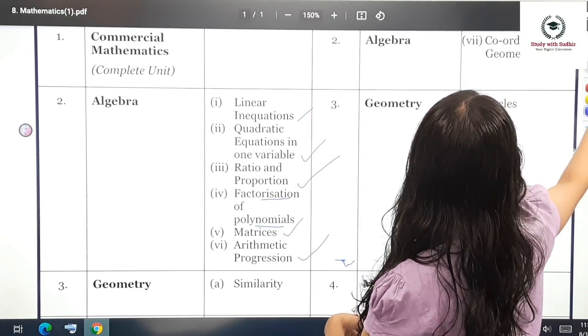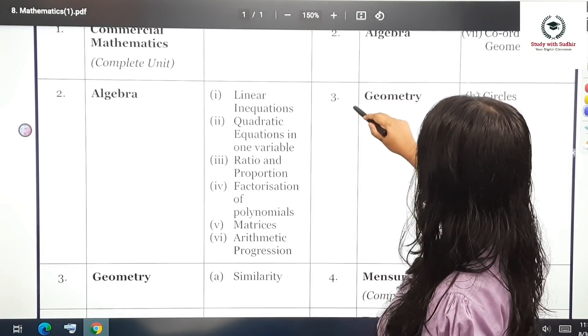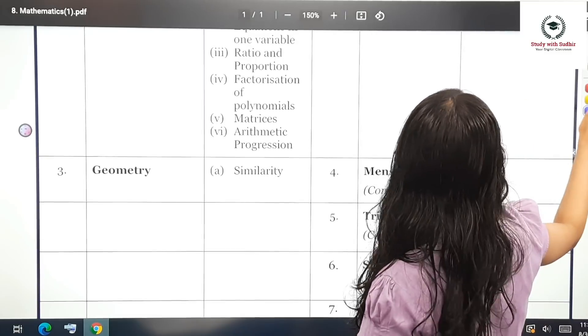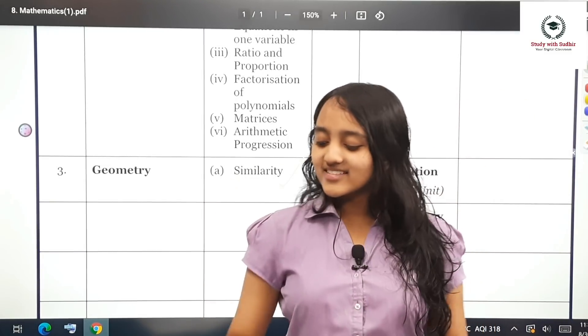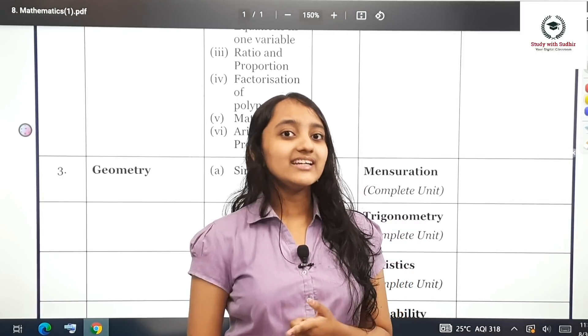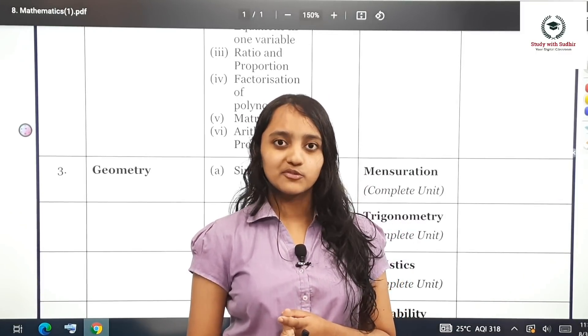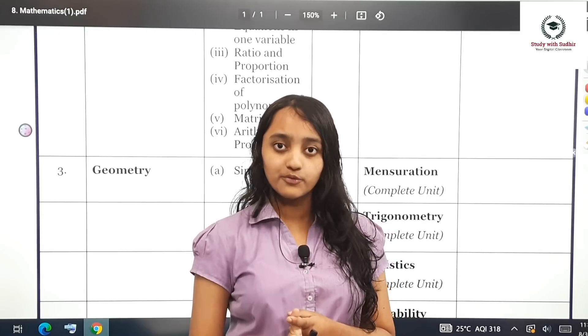Next you have geometry. Geometry is one chapter in semester 1: similarity. For similarity, you don't have any proofs. You don't need to be learning the proofs.